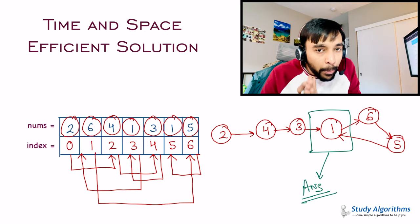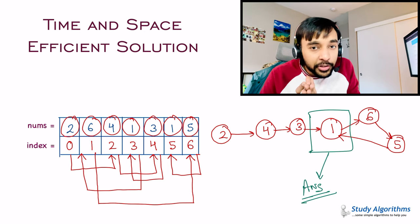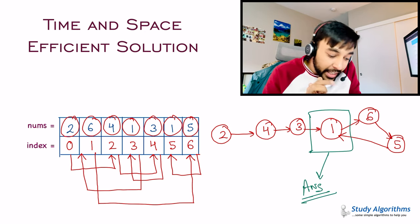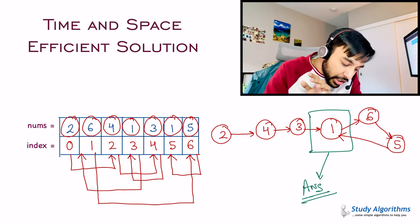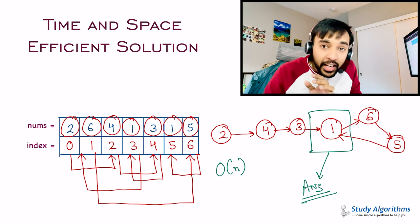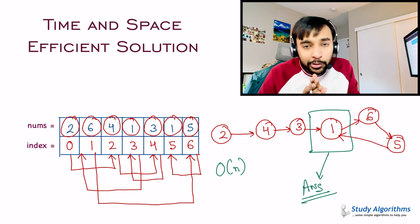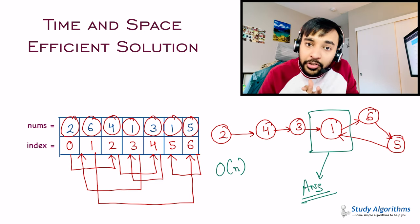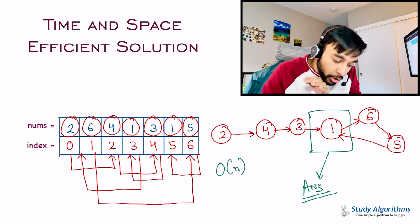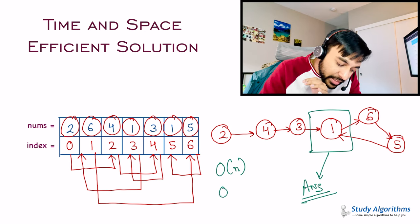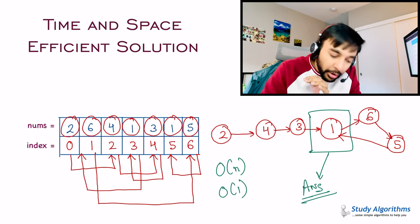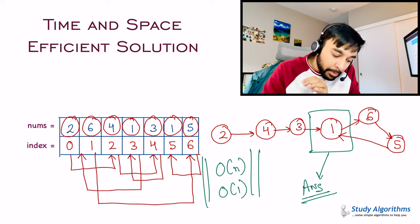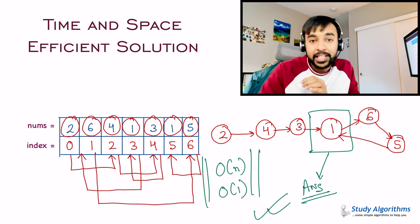The cool part about this solution is that you only do one traversal of the array, so your time complexity remains O(n). And you do not take any extra space to implement this solution, so your space complexity also remains O(1). Hence this solution becomes really, really efficient.